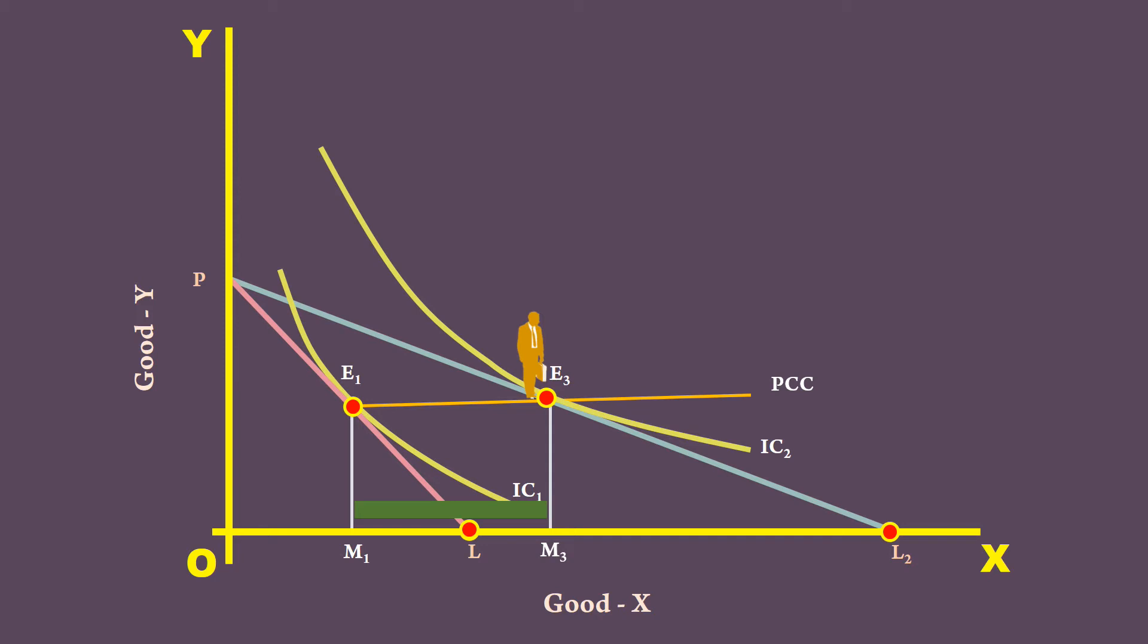The net increase M1-M3 is due to price effect. A part of this increase is due to income effect or increase in the real income of the consumer. The other part is due to substitution effect or relative cheapness of Good X. We shall split these two effects following the Equivalent Variation in Income Approach.